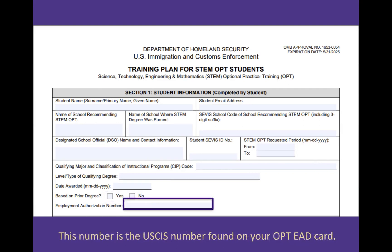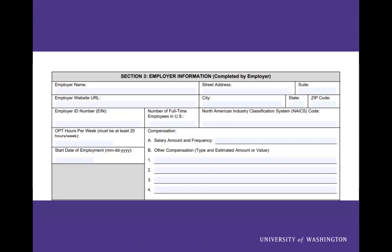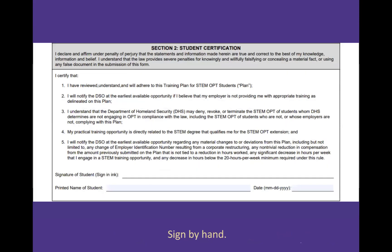Lastly, your employment authorization number is a USCIS number found on your OPT EAD. Section two is the bottom half of page one of the I-983 form and needs to be signed by hand.